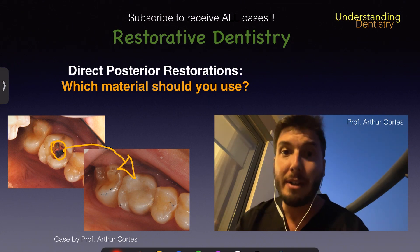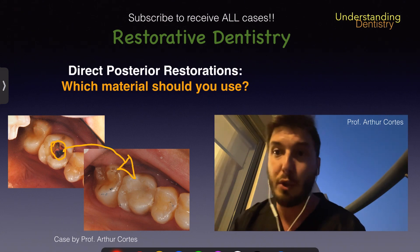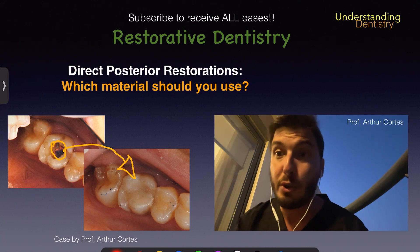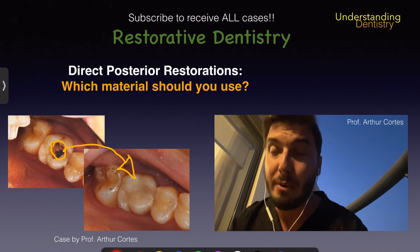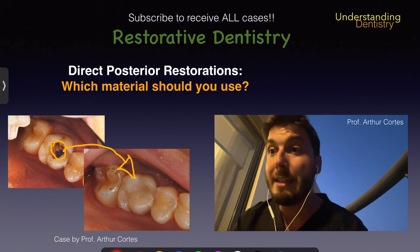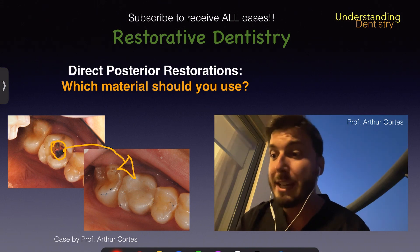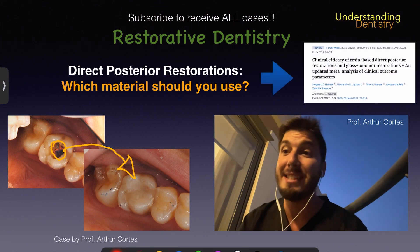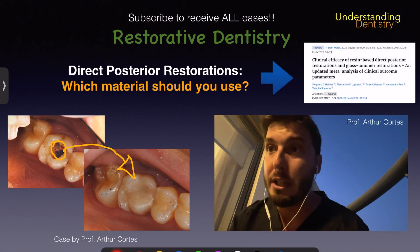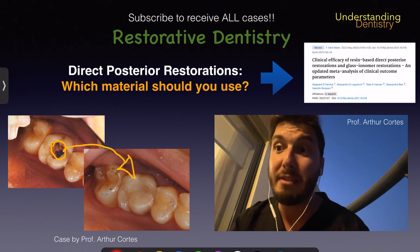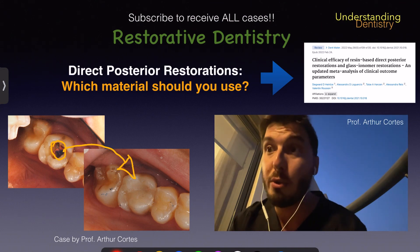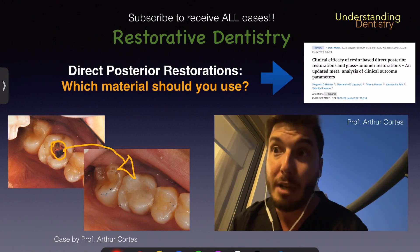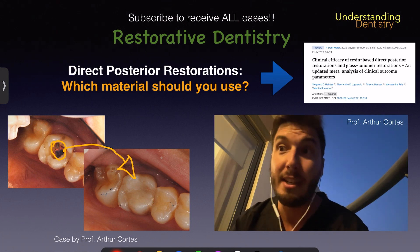I never used amalgam in my clinic, so I am going to focus on the comparison between composite resin materials that we have nowadays and also GIC. For that I am recommending this literature review — a systematic review from a very high impact factor journal called Dental Materials. This article is pretty much updated; it's from last year.